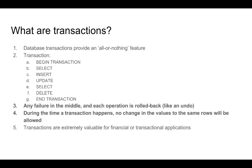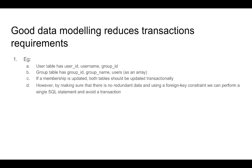Transactions are extremely valuable for financial or transactional applications. A lot of the time, modeling our data well and especially normalizing our data models can reduce the requirements for having transactions. For example, with a simple user and groups modeling: we have a user table and a groups table. Inside the user table we store the user ID, user name, and the group the user belongs to. In the group table we store the group ID, the group name, and an array of users as a JSON column.